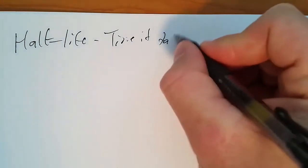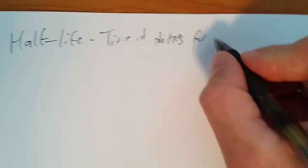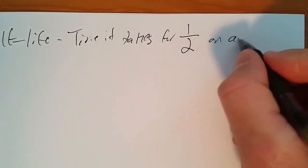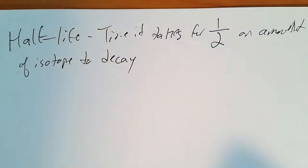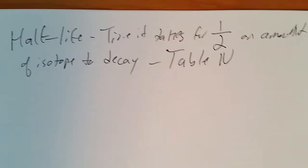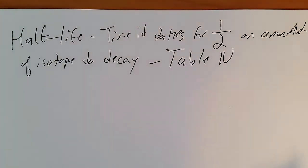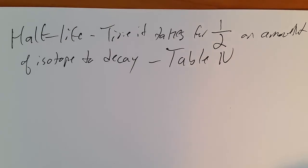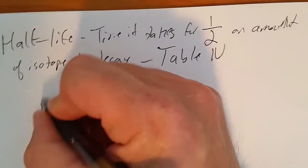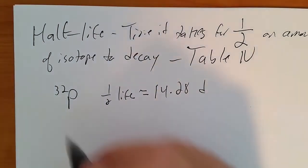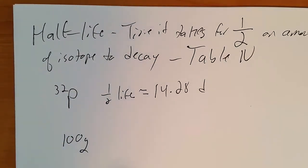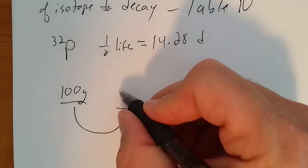Next we talk about half-lives. Half-life is a measurement of time it takes for exactly one half an amount of isotope to decay. These are on Table N as well. Let's take phosphorus-32. The half-life equals 14.28 days. If we start with 100 grams of phosphorus-32, one half-life later, 14.28 days, there will be half of that, 50 grams.